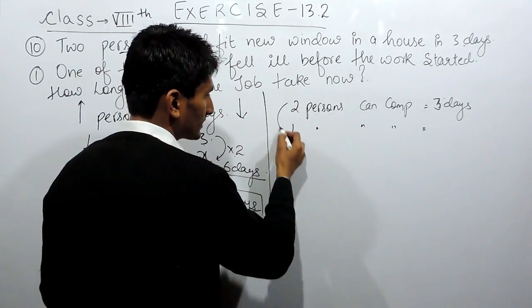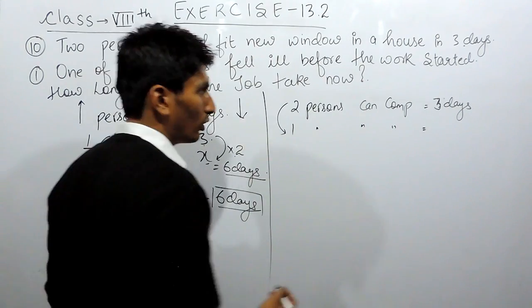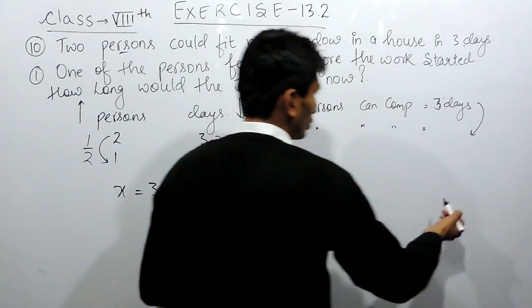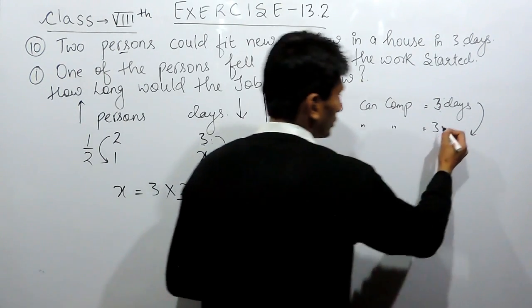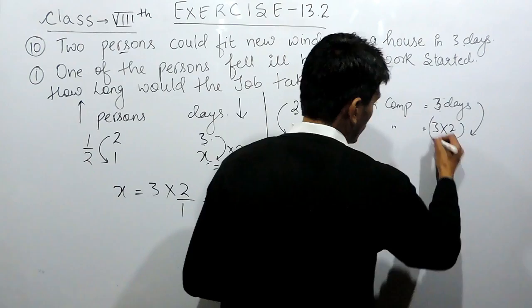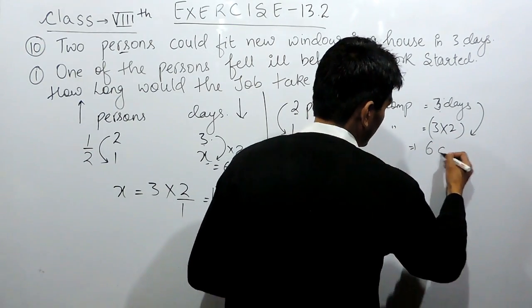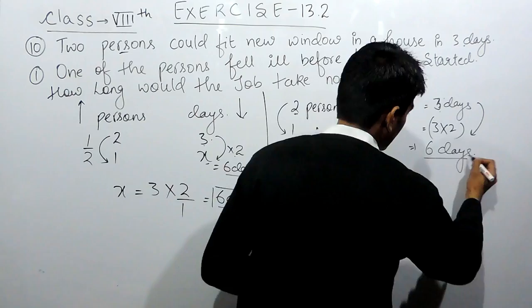So obviously 1 person can complete the work in... Here the number of persons are decreased, so obviously this must increase. To increase this, I have to multiply this with 2. So the number of days taken by one man must be 6 days.